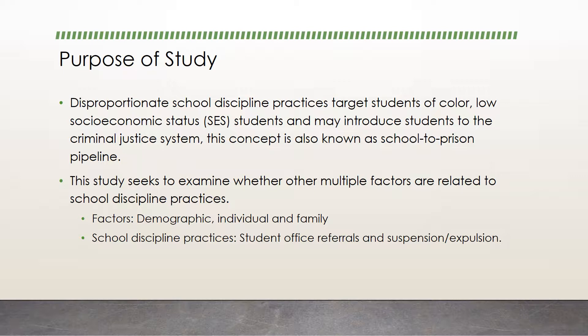The purpose of the study was to explore whether factors other than race, socioeconomic status, and gender contribute to the disproportionality of school discipline practices. The study examined individual factors encompassing academic engagement and mental health, family relationships involving parent level of engagement, alcohol or drug use, and family culture, and demographic factors involving parent level of education, race/ethnicity, and gender. The study focuses on two key discipline practices: office referrals and suspension/expulsion.